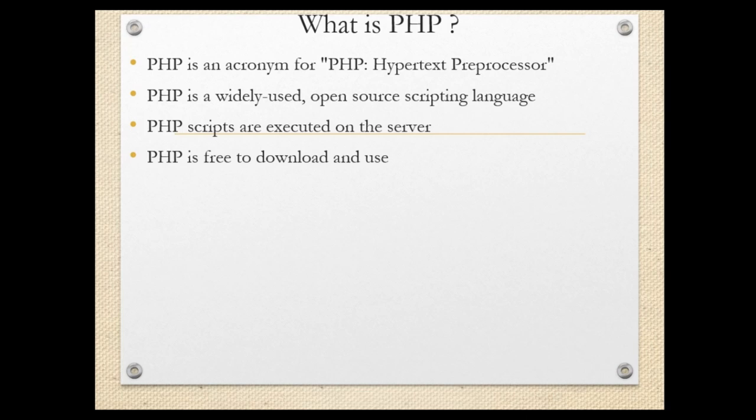Now, what is PHP? PHP is a widely used open source scripting language. Basically, PHP is an open source scripting language that is executed on the server. PHP is free to download and use — we can download it from any browser or server, install it, and easily use it. So this is a small introduction of PHP: it stands for Hypertext Preprocessor, it is freely available, open source, executed on the server, and free to download and use.